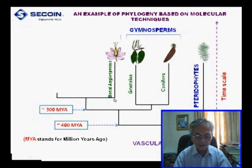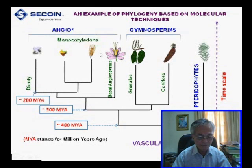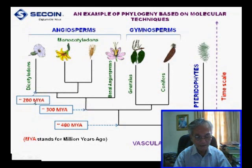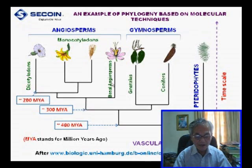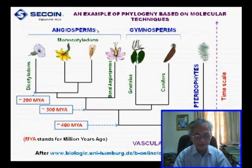After that, the basal angiosperm was born, and from 200 million years ago, the dicotyledone and monocotyledone were born. Dicotyledone, monocotyledone, and basal angiosperm belong to angiosperm. Angiosperm means the plant has a seed that is enclosed in a pericarp.